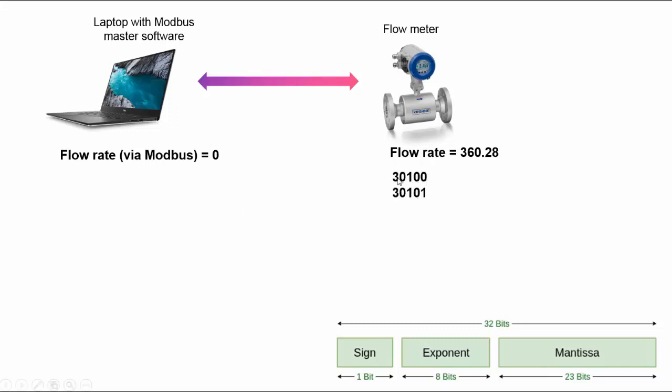The actual readings of the flow rate were stored at 30100 and 30101 input registers, and these were the values that appeared there. However, it was stored as Little Endian format with the LSW here and the MSW here.